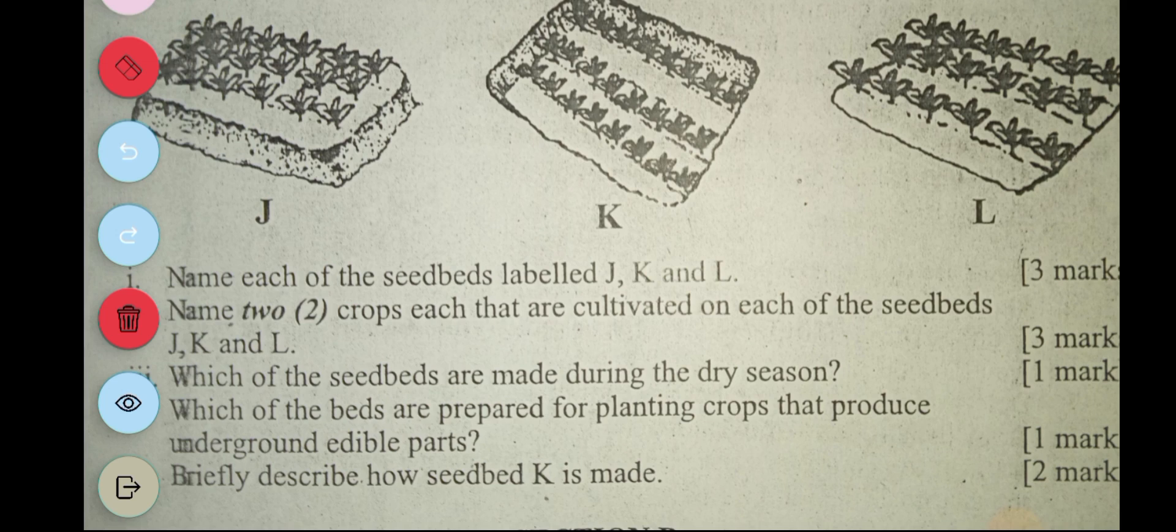Then the last question says: briefly describe how seed bed K is made. So with K, first of all, you select your area, you mark out the area and then you remove weeds. After removing weeds, you dig down to thick soil below the normal ground level. And then you fill with compost.